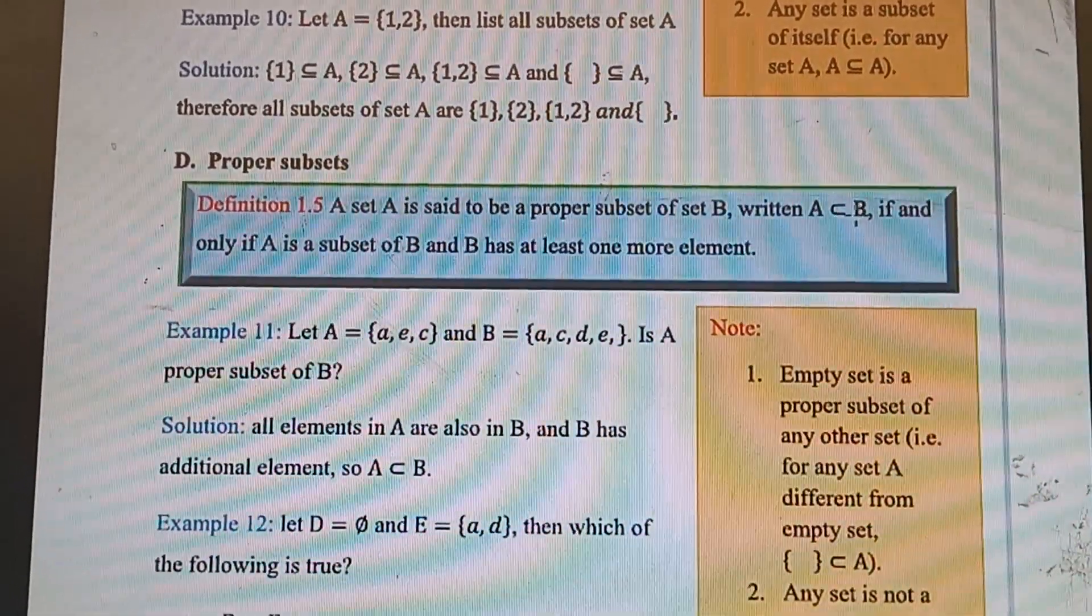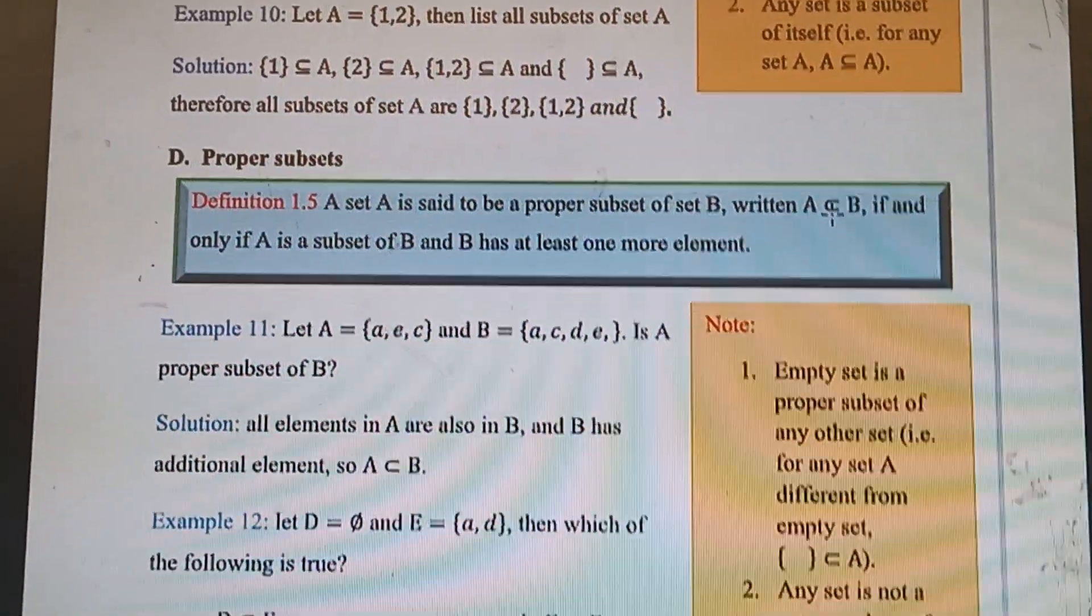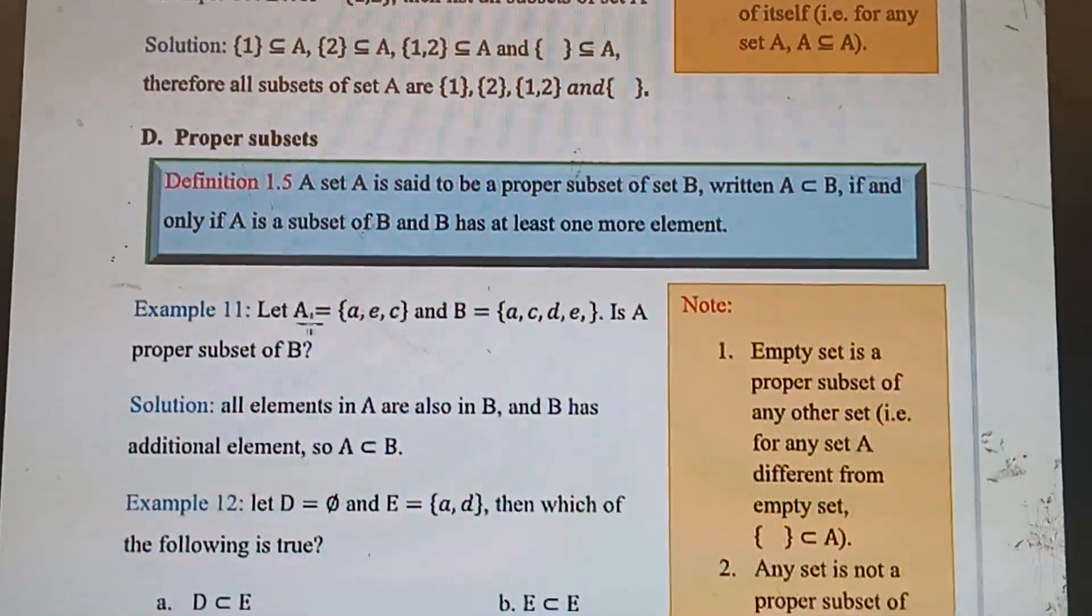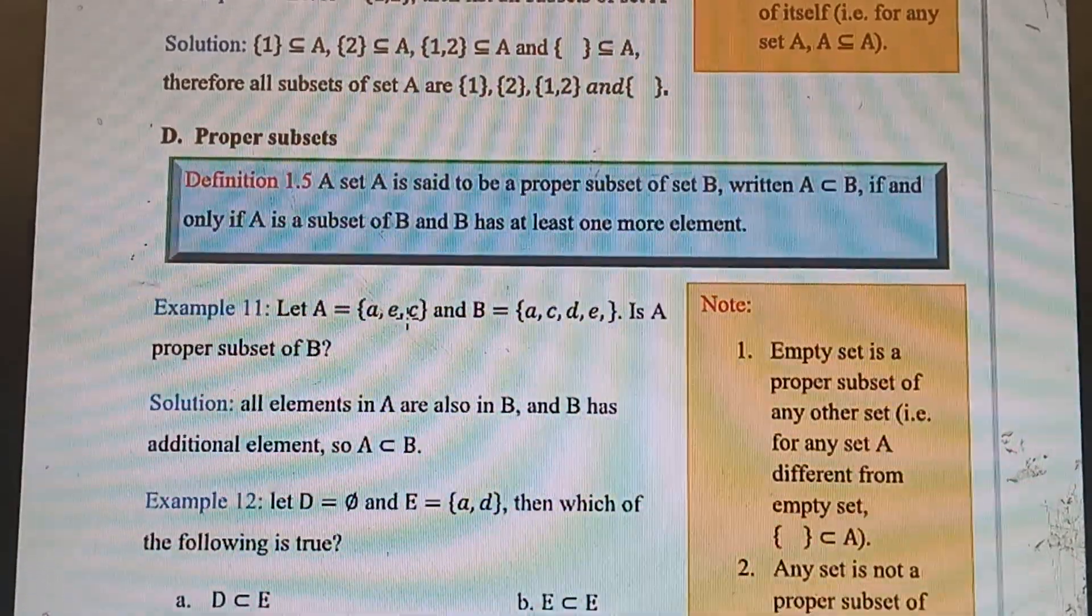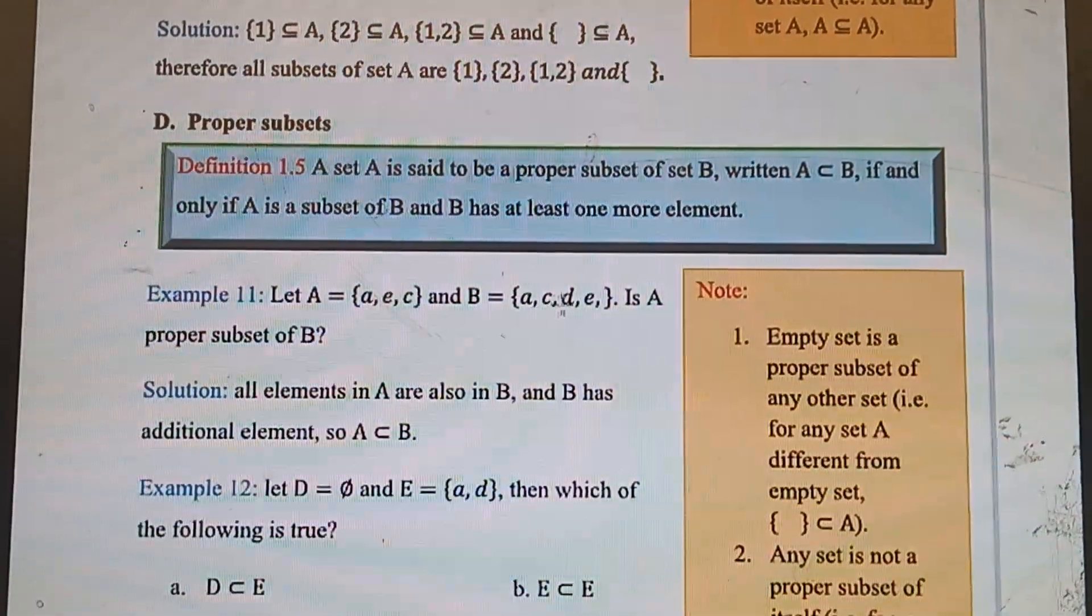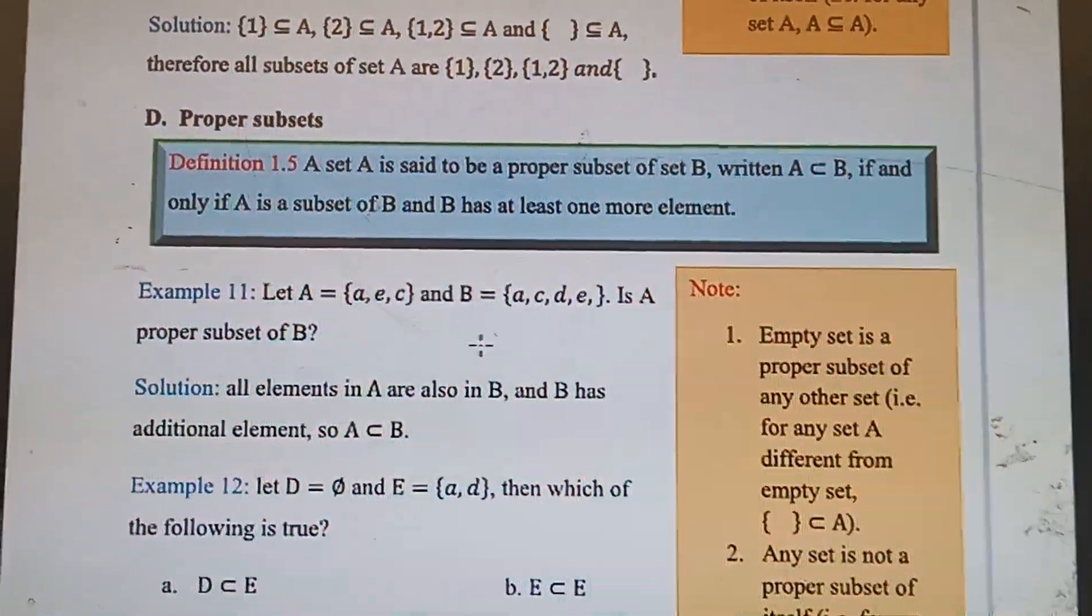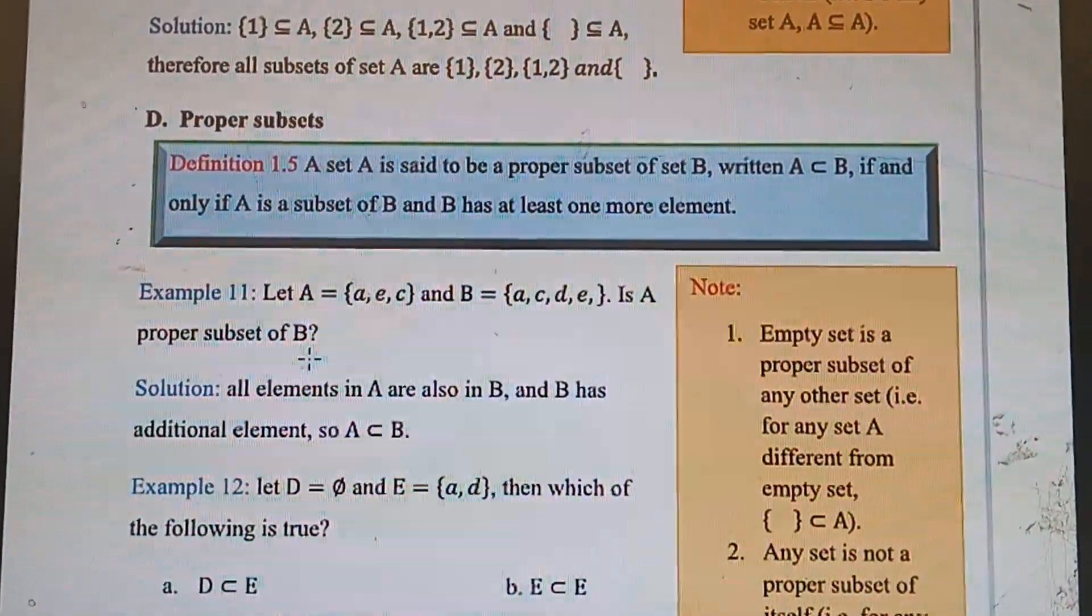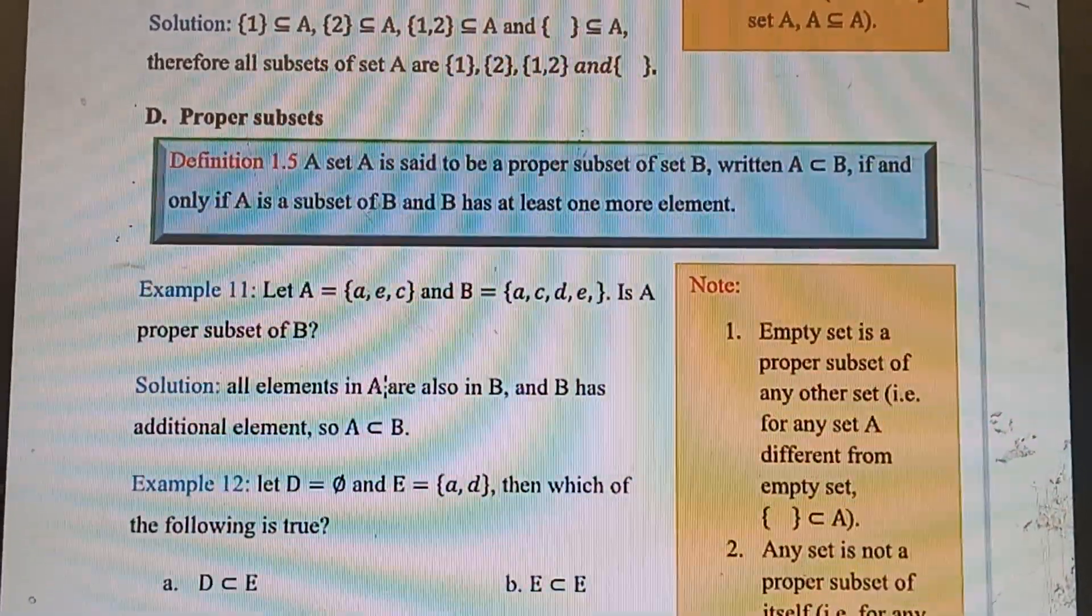Okay students, let's go to Example 11. Let set A equal {a, e, c} and set B equal {a, c, d, e}. Is A a proper subset of B? Now we are going to answer this question. Solution: all elements in set A are also in B.